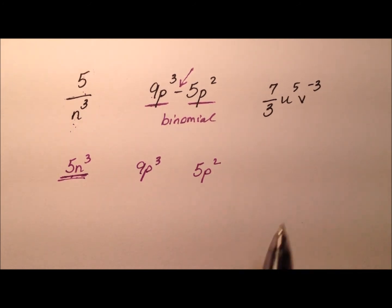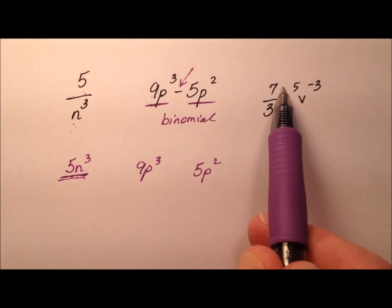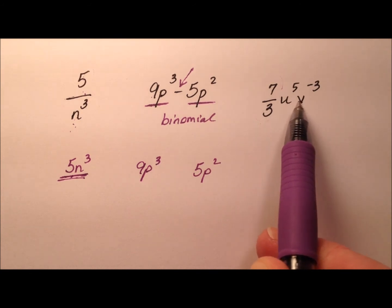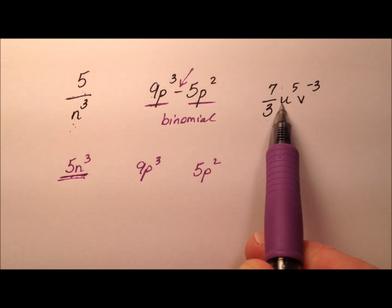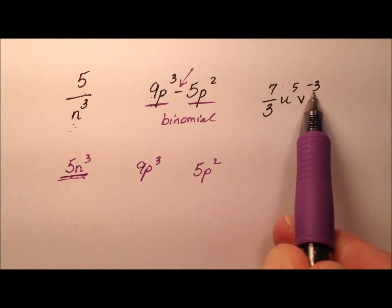So let's look at this last one. We have 7 thirds u to the fifth v to the negative third. So we have a fraction here, which is a coefficient, which that's okay. And we have a couple of variables, but we need the variables to have whole number exponents. This one's a 5, which is a negative 3.